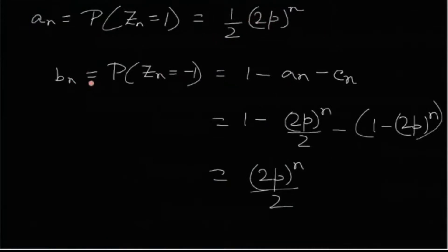So bn can be easily found out by probability. Zn equals to minus 1 is nothing but 1 minus probability. Zn equals to 0 and zn equals to 1. Because obviously Zn takes only three values, 1 minus 1 and 0. So from there we can find that it's again 2p whole to the n by 2.